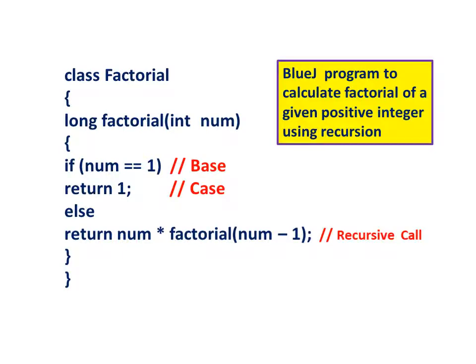BlueJ program to calculate the factorial of a given positive integer using recursion. Class factorial: long factorial(int num) — if num equals 1, return 1; else return num multiplied by factorial(num minus 1).